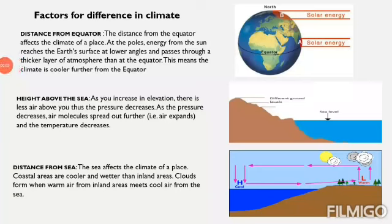Now we will discuss the factors for difference in climate — what causes certain places to have cold climate and some places to have hot climate. The first factor is distance from the equator. At the poles, energy from the sun reaches the earth's surface at lower angles and passes through a thicker layer of atmosphere than at the equator. This means the climate is cooler further from the equator.